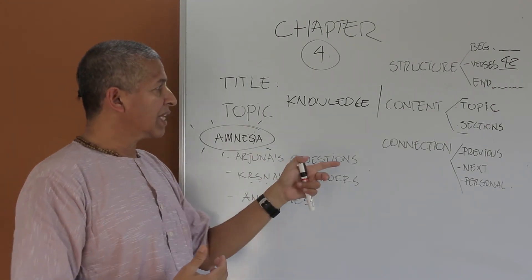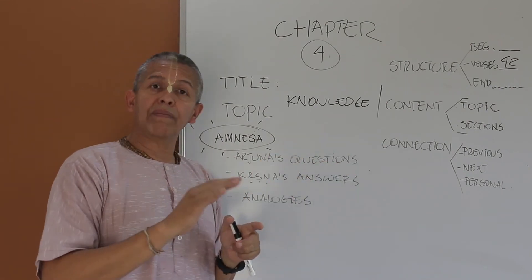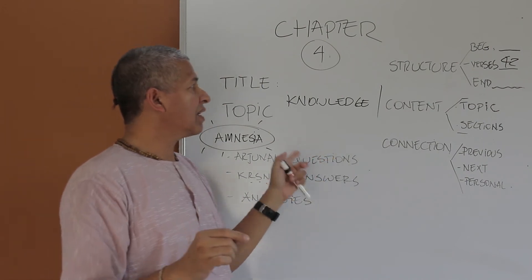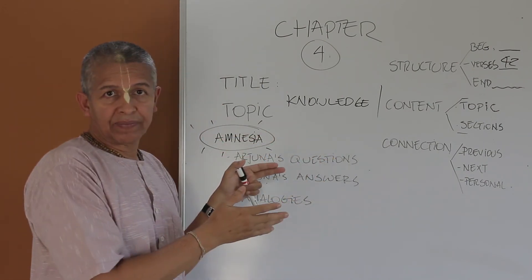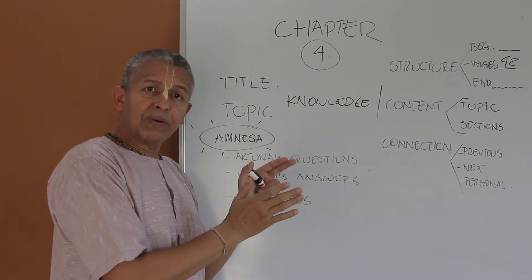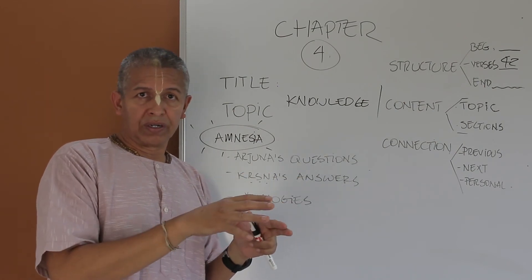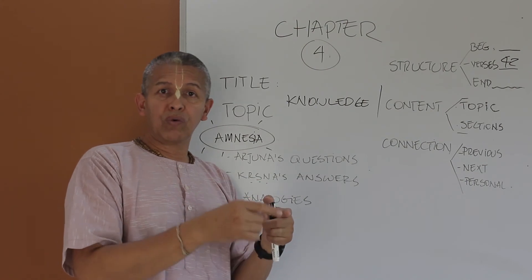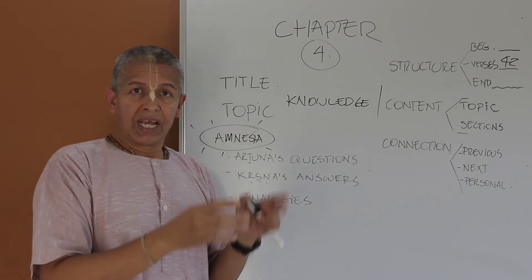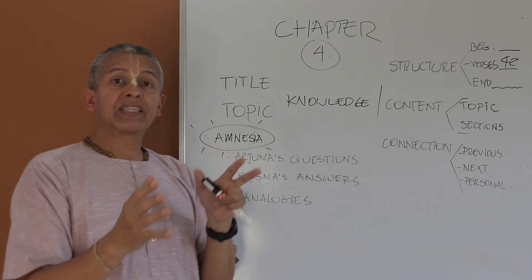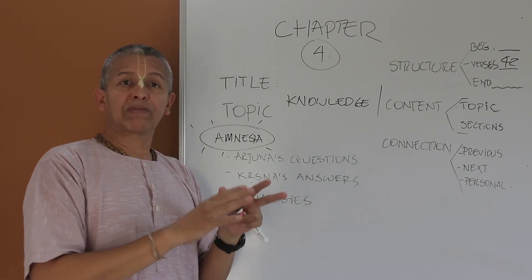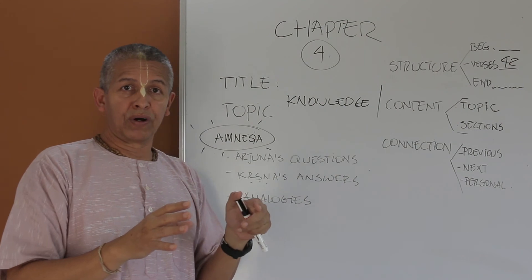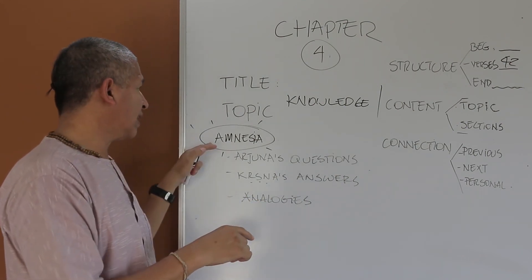So the connection with the next chapter, chapter 5, called Karma Yoga or Action in Krishna Consciousness, is that here in this chapter, towards the end, Lord Krishna will explain the characteristics of such work. You will see what are the results of those who work in Krishna Consciousness. Now, chapter 5, it's entirely dedicated to explain what is the result of applying chapter 2, 3 and 4.